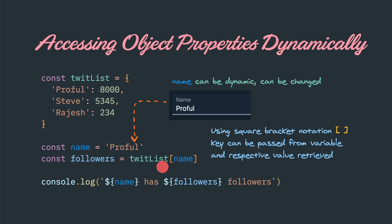For example, inside the square bracket we can pass a variable. These values we can retrieve from some input box or from an API to access the object properties. For example, if the name we got is like 'profile', we can return 8000 into the follower count and the combination can be printed.